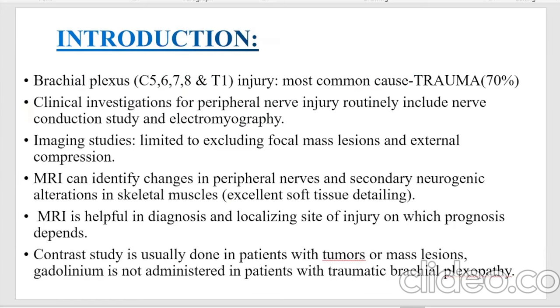The brachial plexus includes C5 to T1 nerve roots. The most common approach of brachial plexus injury is trauma.